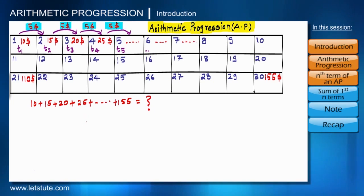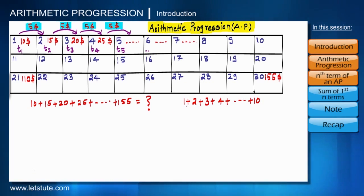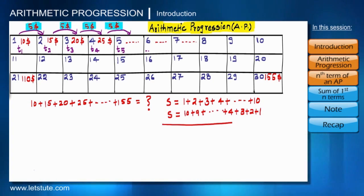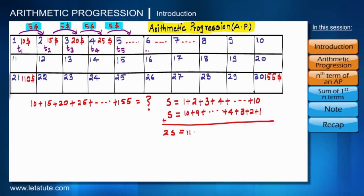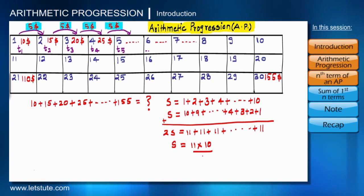That boy answered the question very quickly. He wrote S = 1 + 2 + … + 10, then again wrote the same expression in reverse order, and added the two. S + S gives 2S. Each pair sums to 11 — there are 10 such pairs — so 2S = 11 × 10, giving S = 55.